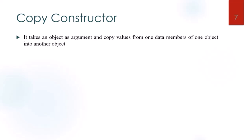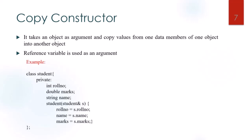The last constructor is the copy constructor. The copy constructor takes an object as an argument and copies values from the data members of one object into another object. A reference variable is used as an argument to the copy constructor. In the example, the syntax uses the class name followed by a reference variable and object, and data is copied — for example, 'roll number = s.roll number'.